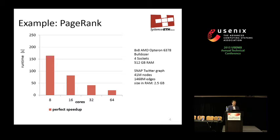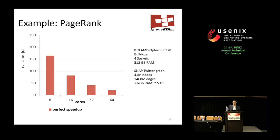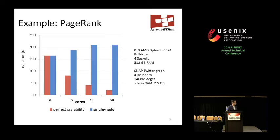Let me give you an example. This is a shared memory version of PageRank, a program with a lot of parallelism. You would expect perfect scalability with the number of cores — the red bars show what you'd expect. But what you get with a really bad memory allocation, such as allocating everything on a single node, is shown with the blue bars: contention on the interconnect and load imbalance of memory controllers.